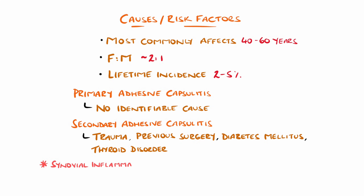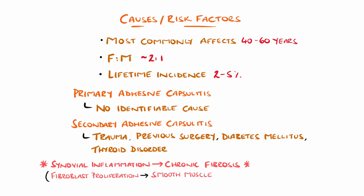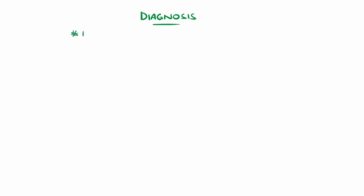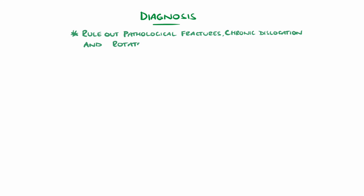The mechanism behind adhesive capsulitis is poorly understood, though it is thought to result from synovial inflammation leading to chronic fibrosis, with evidence of fibroblast proliferation, smooth muscle transformation, and collagen deposition. Diagnosis is clinical, meaning no specific test or imaging is required, though it is usually a diagnosis of exclusion after ruling out other differentials such as chronic dislocations, pathological fractures, or rotator cuff tears.